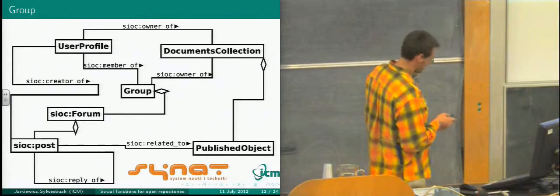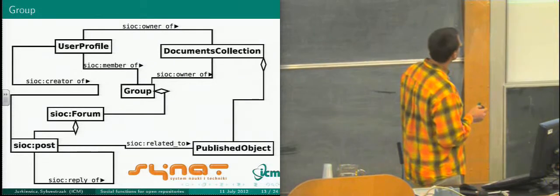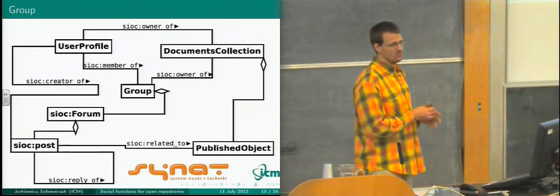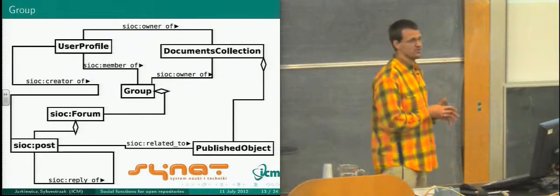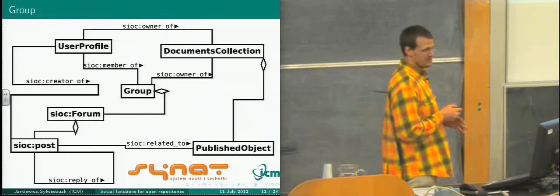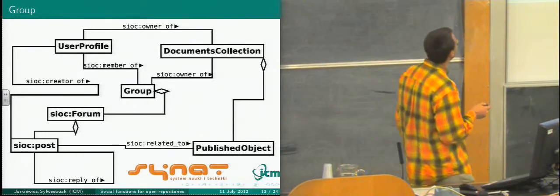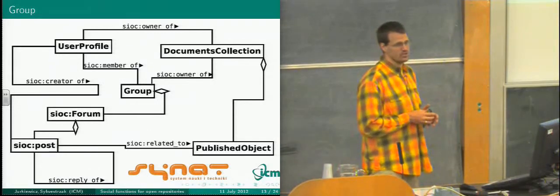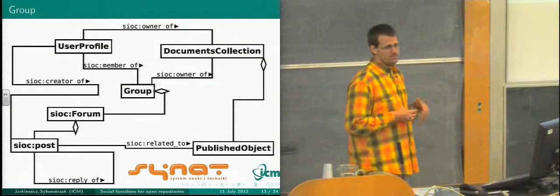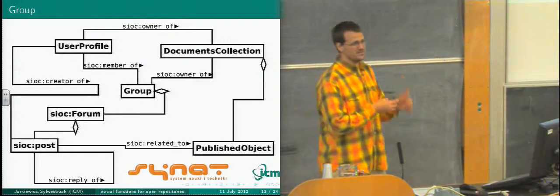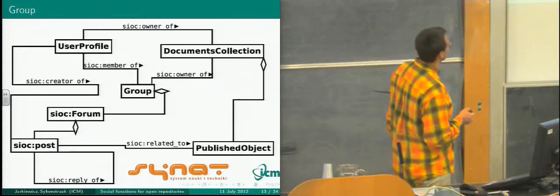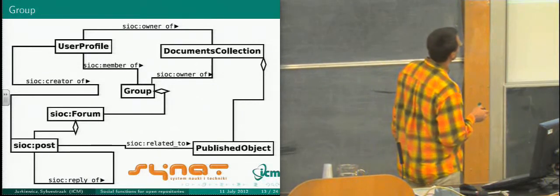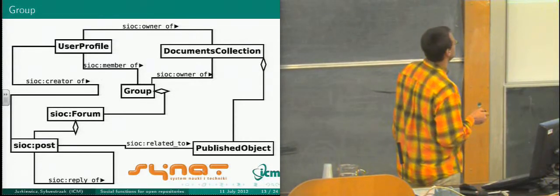Now about groups: user profile is a member of the group. We cannot say if the person is a member of the group, but the person profile is an object existing in the system and is connected to the group. A user profile could also be the owner of some document collection — for example, a professor makes a reading list and says to students, 'this is the reading list, please read it.' A group could also have some document collection, like an international working group could have a common reading list. This list contains some published objects.